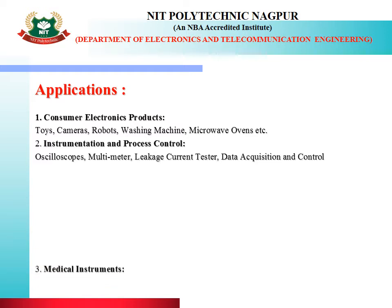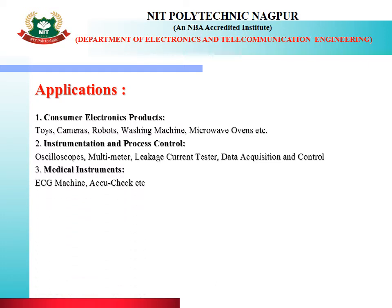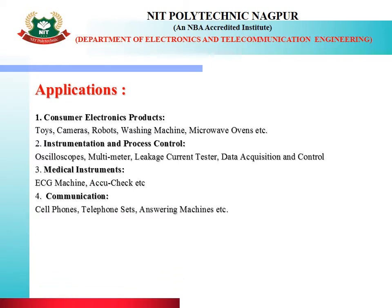It is used for data acquisition and control. It is used in medical instruments for ECG machines and blood glucose checking machines. It is also used for communication between two devices, for example cell phones, telephone sets, answering machines, etc. It is used in office equipment like fax and printers, and these are the best examples for microcontroller 89C51.